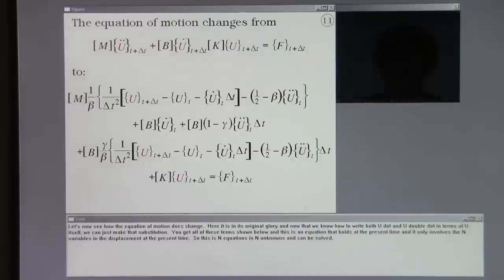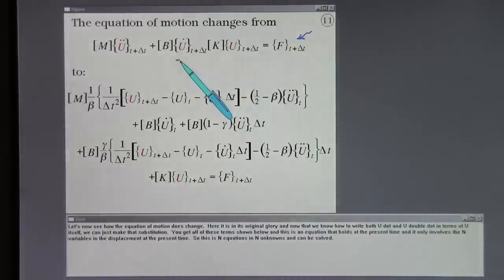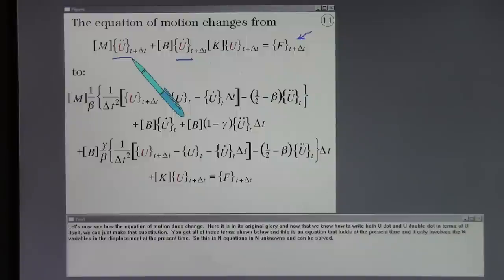Let's now see how the equation of motion does change. Here it is in its original glory. And now that we know how to write both u dot and u double dot in terms of u itself, we can just make that substitution. You get all of these terms shown below and this is an equation that holds at the present time and it only involves the n variables in the displacement at the present time. So this is n equations and n unknowns and can be solved.